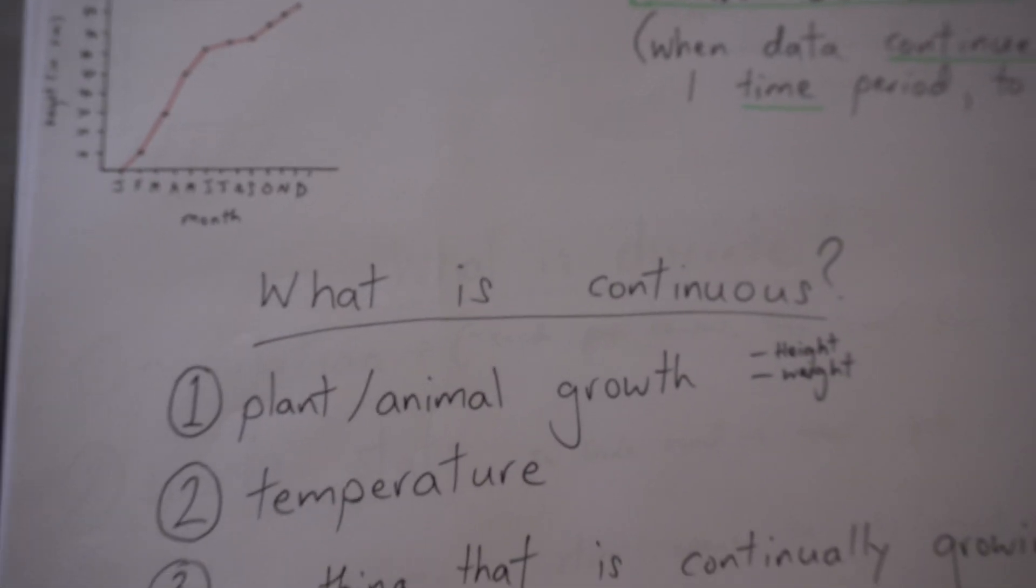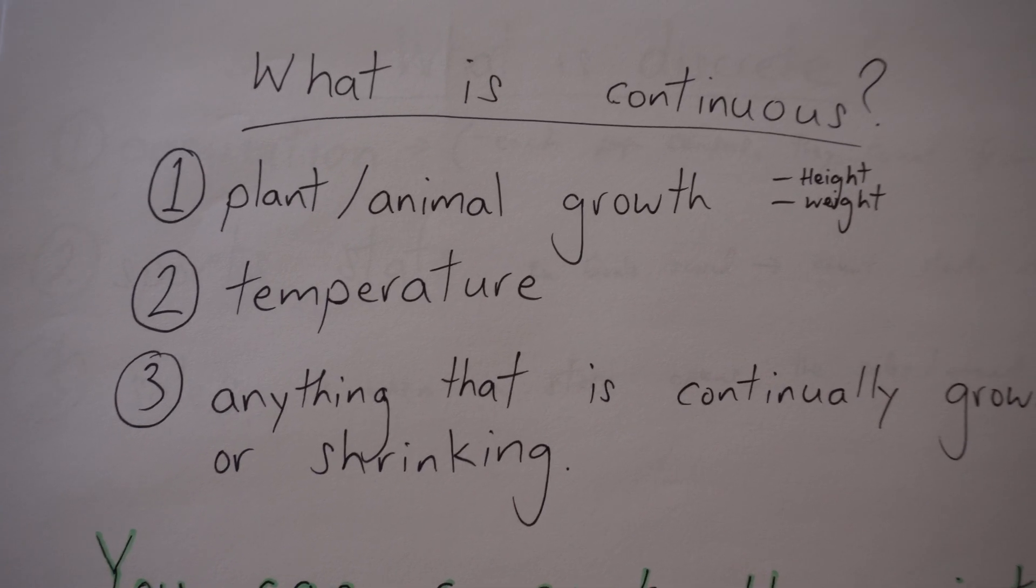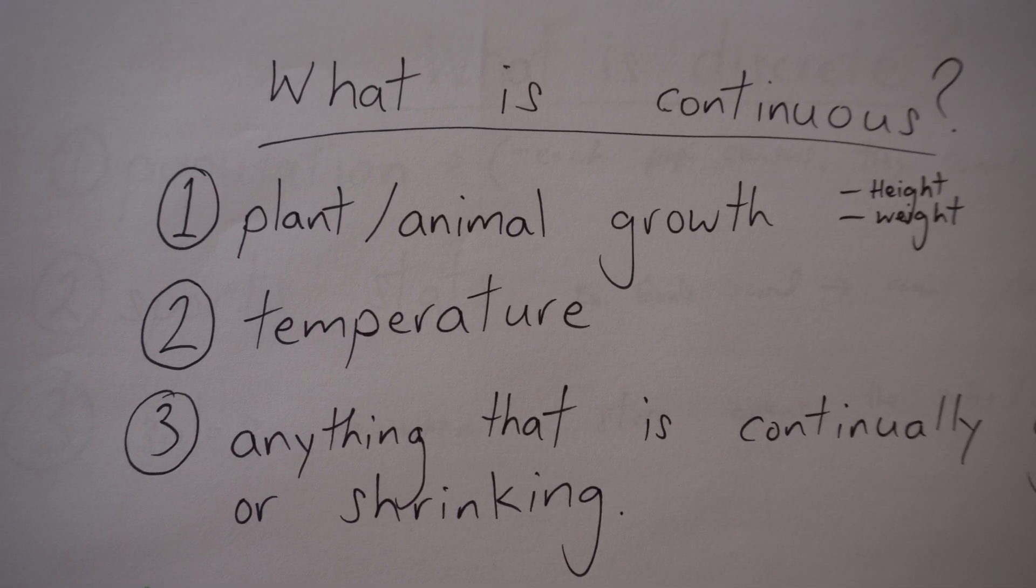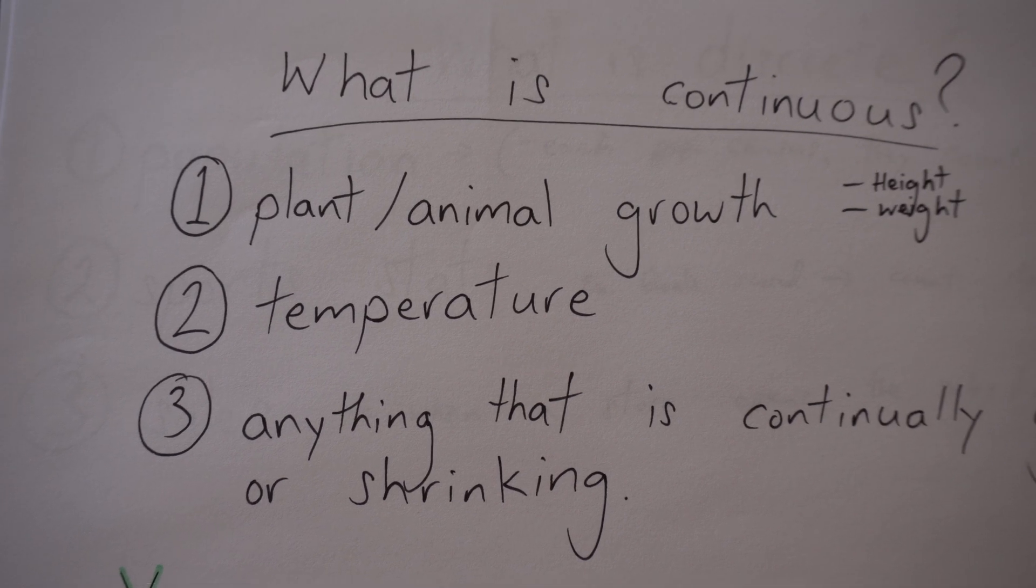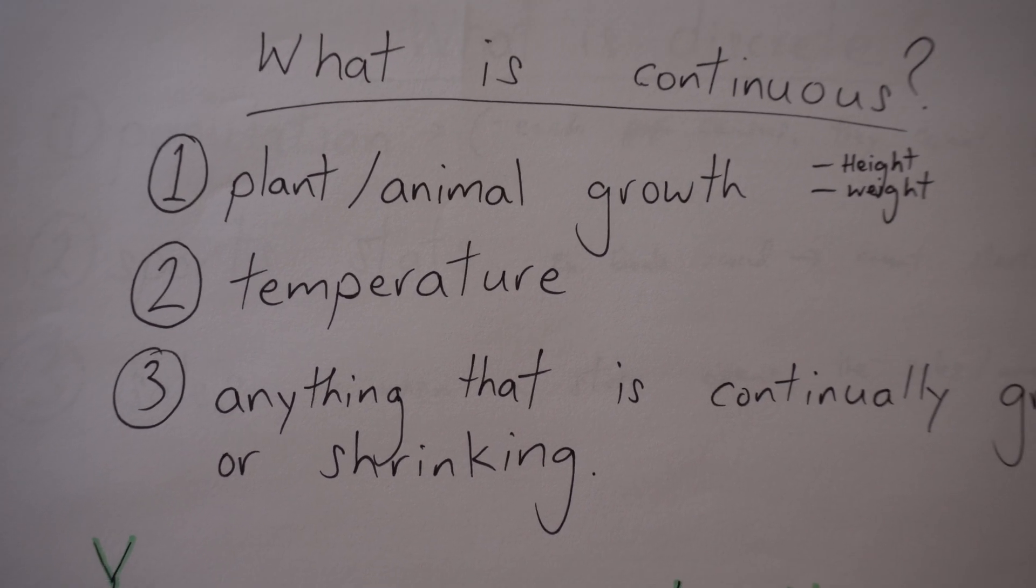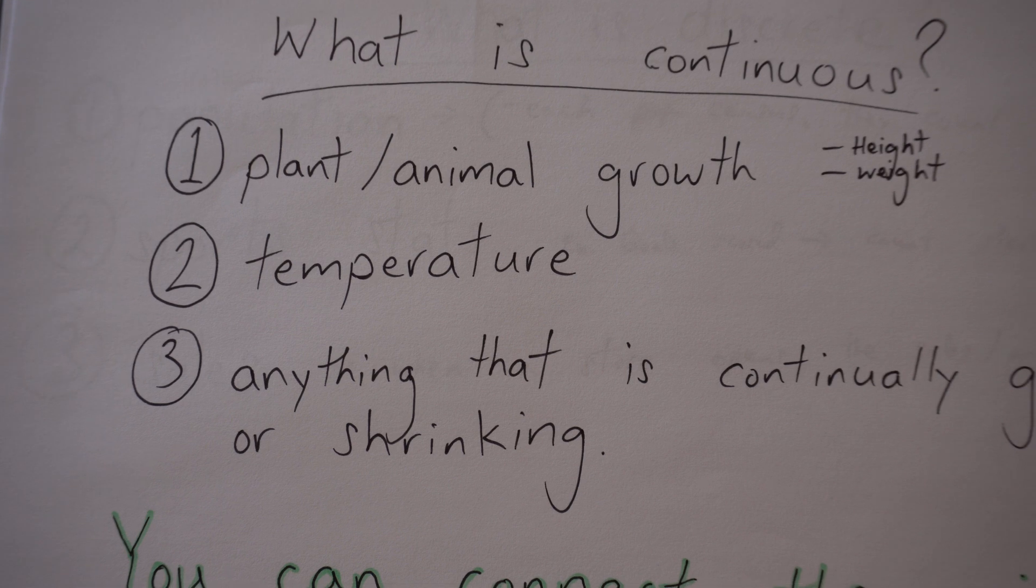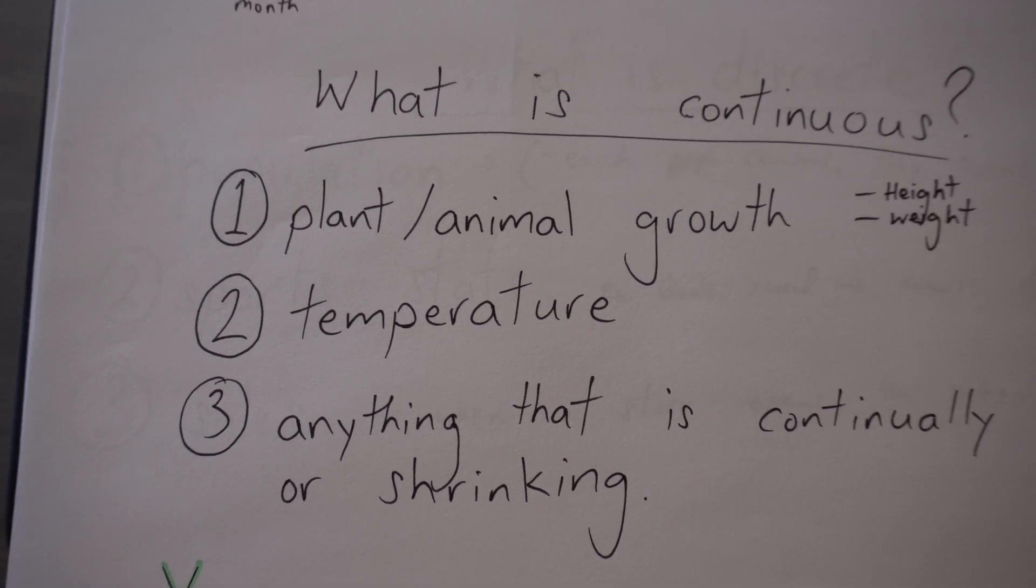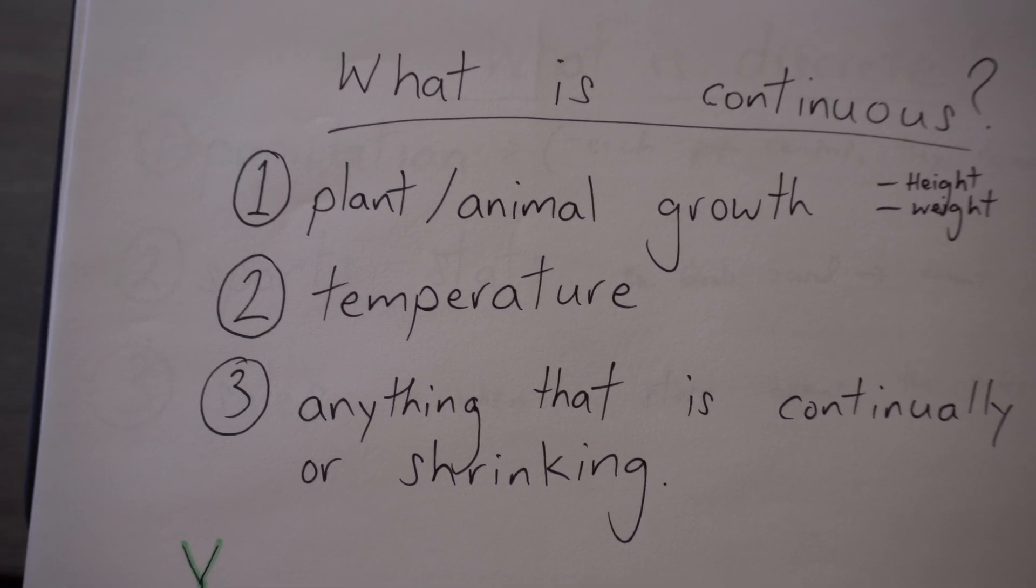So what is continuous? Number one, plant and animal growth. The height and weight of plants and animals is continuous. Because usually what happens is you grow, and you keep growing, you keep growing, and then you stop. Or maybe you keep growing.